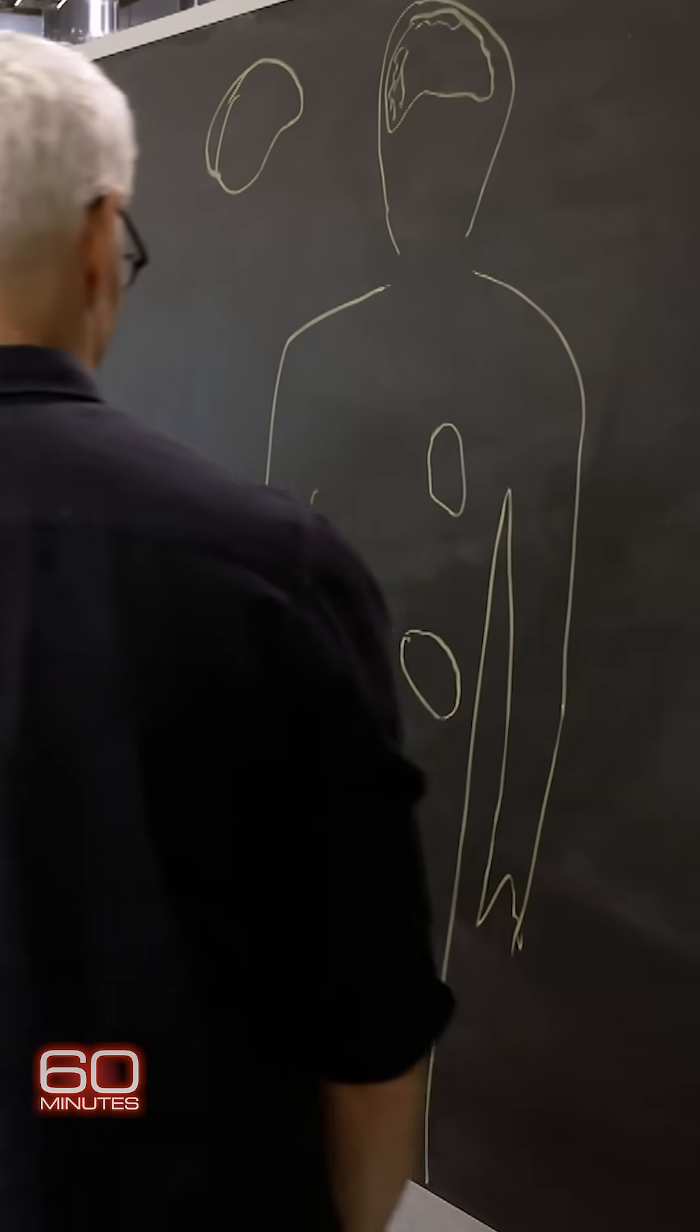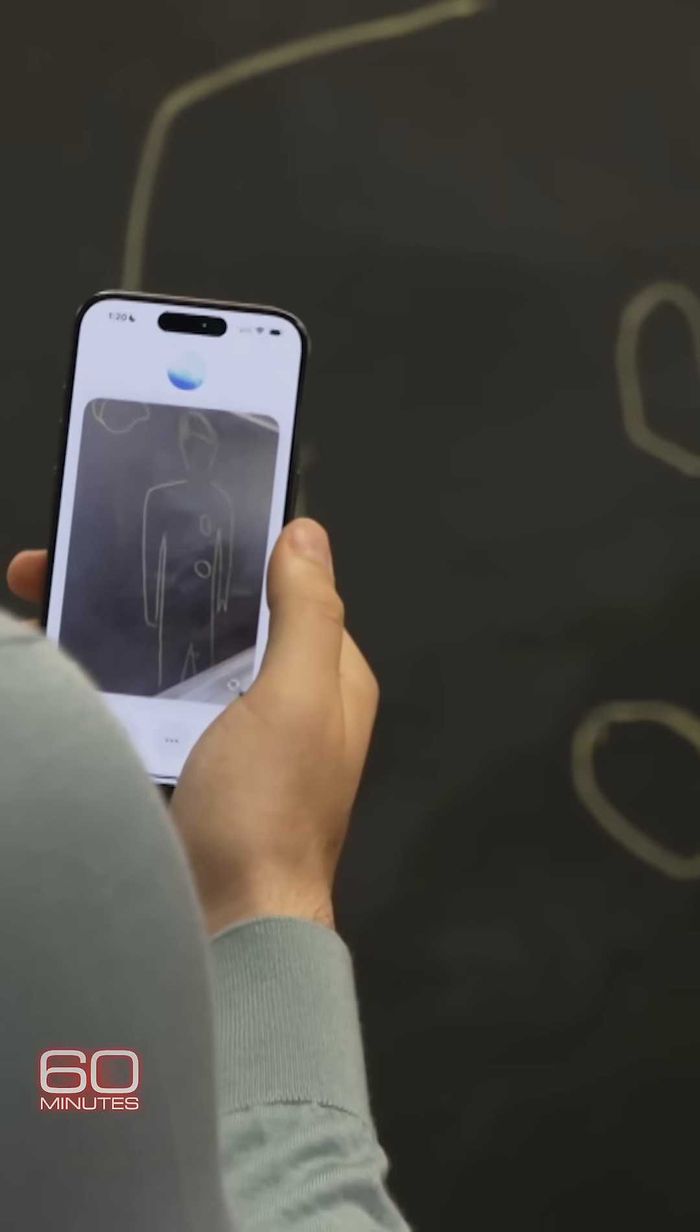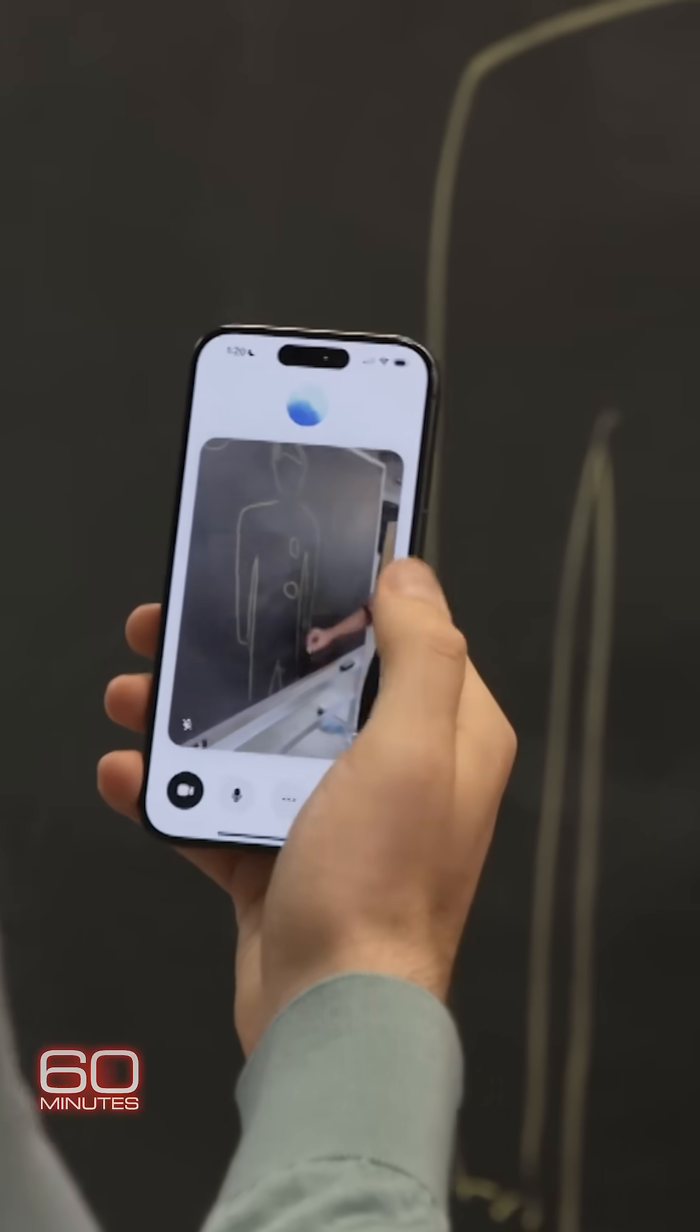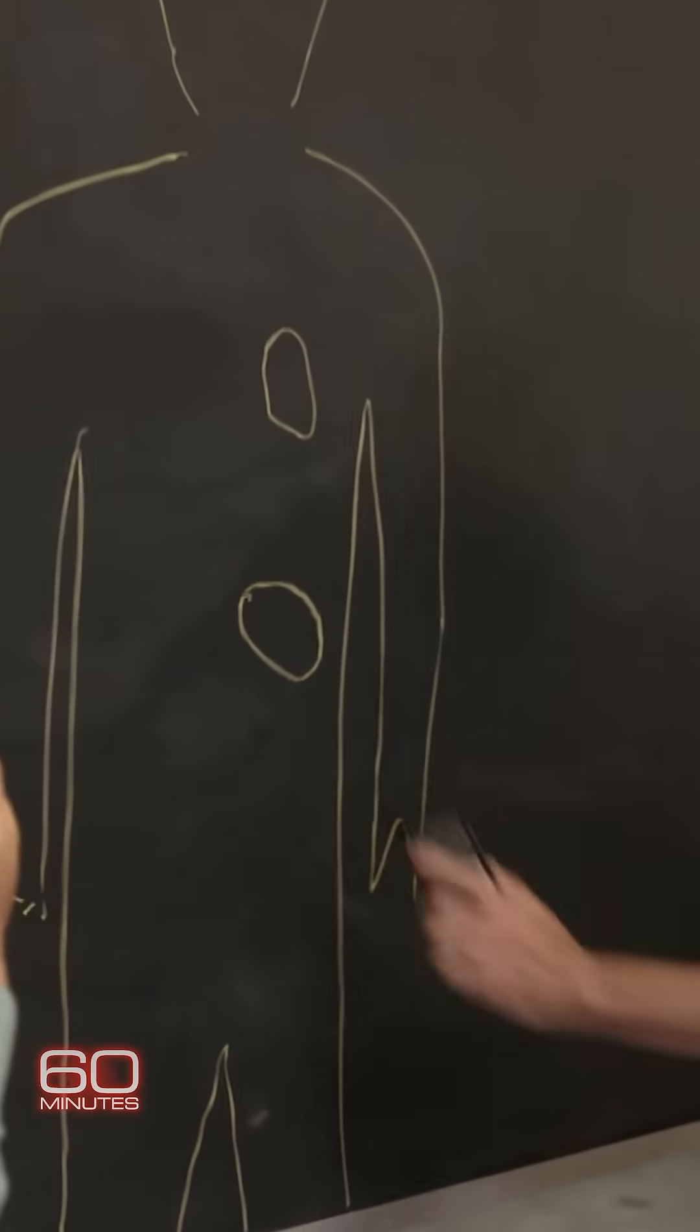I put the liver on the wrong side of the body. ChatGPT corrected me, politely. Anderson's placement is close, but it's primarily on the right side, just below the diaphragm.